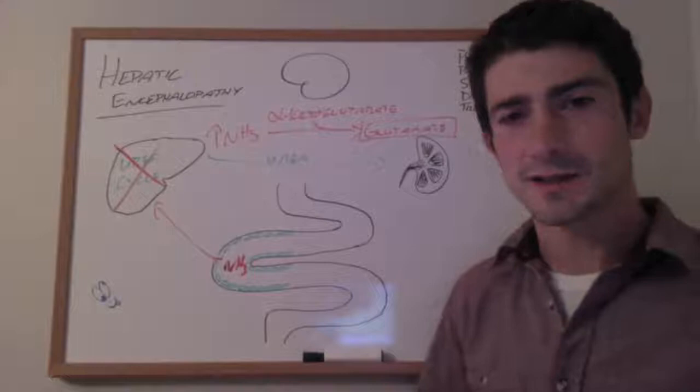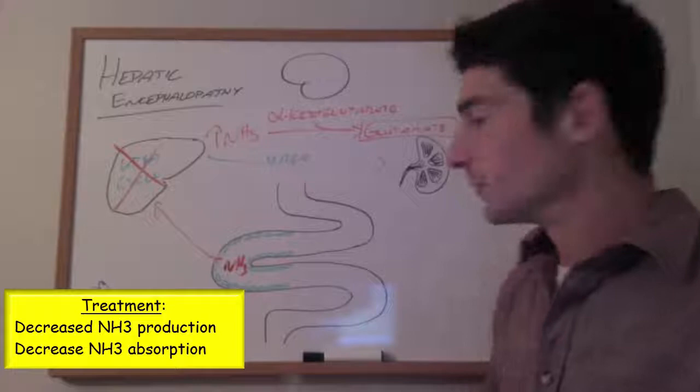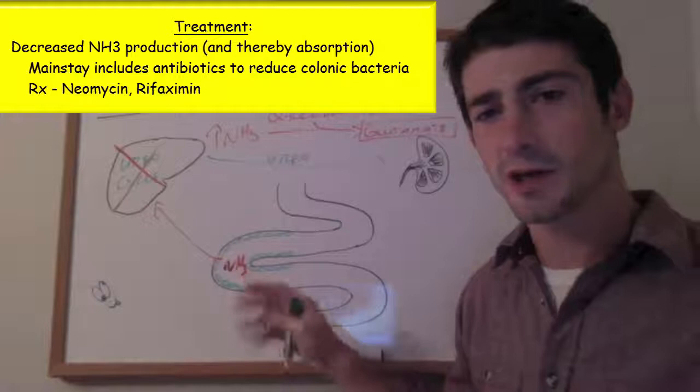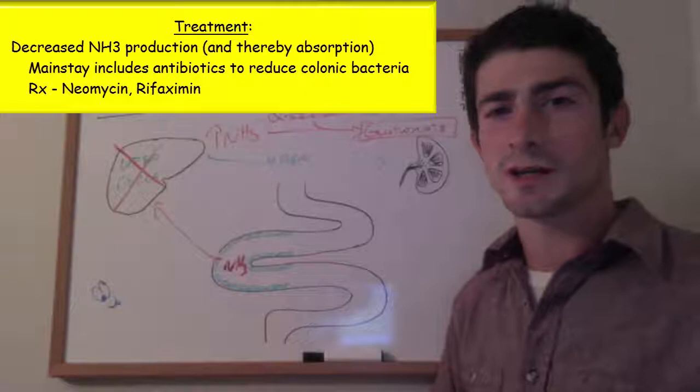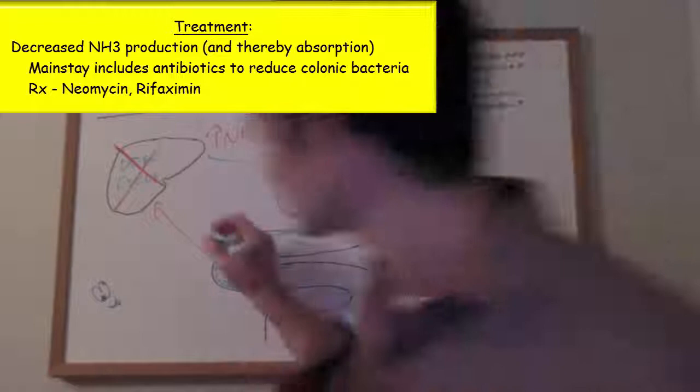For treatment, once you've identified it as hepatic encephalopathy, there are a few things you can do. Because a lot of the ammonia is produced by the colonic bacteria breaking down the protein in our diet, you can kill these colonic bacteria with antibiotics. The two most common are neomycin and rifaximin.